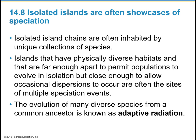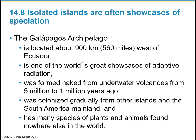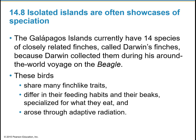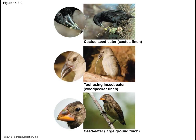The evolution of many diverse species from a common ancestor is known as adaptive radiation. The Galapagos Islands, about 900 kilometers west of Ecuador, is one of the world's greatest showcases of adaptive radiation. Formed from underwater volcanoes between 5 million and 1 million years ago, it was colonized gradually from other islands and the South American mainland and has many species found nowhere else in the world. The islands currently have 14 species of closely related finches called Darwin's finches — they share many finch-like traits but differ in feeding habits and beak shape, which arose through adaptive radiation.